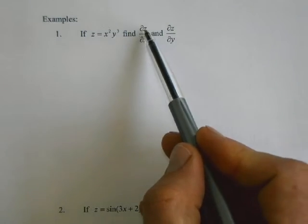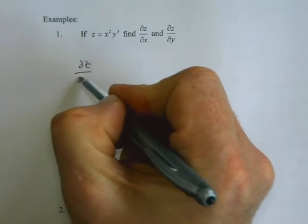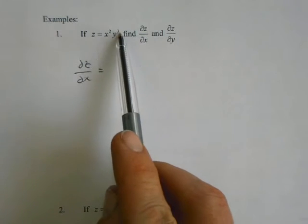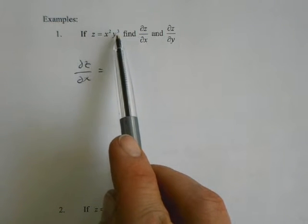Okay, so the first one is just partial z with regards to x, so partial z partial x. So here's our function z, so x is a variable, y is a constant.